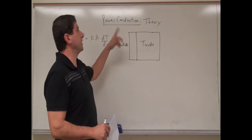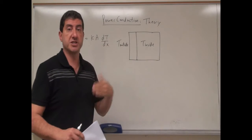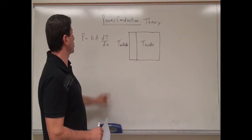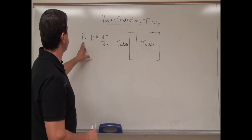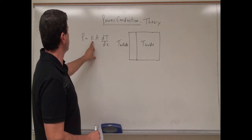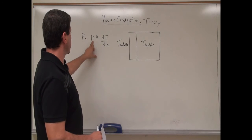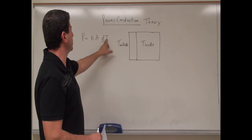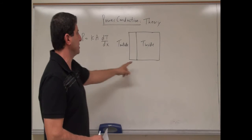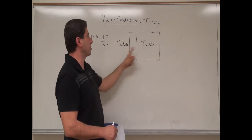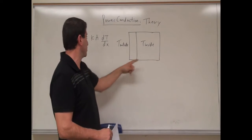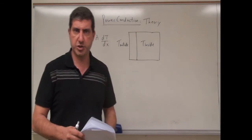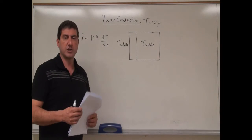Welcome back. Now we're going to cover the theory behind the power conducted through a material. We have the equation: power is equal to conductivity k times the surface area times the change in temperature — the difference of the temperature of the two materials — divided by the thickness of the material, so dT over dx.